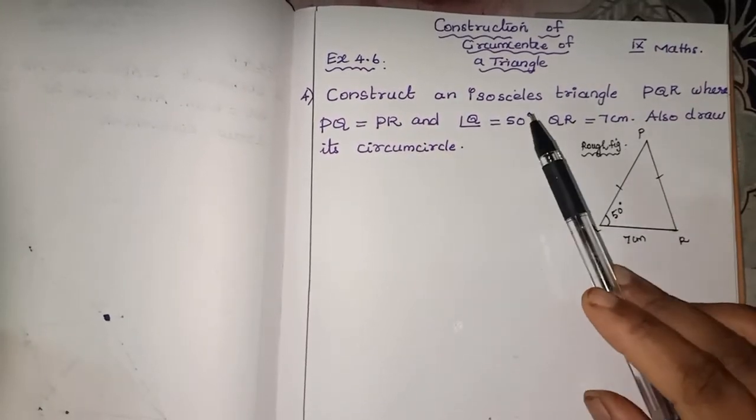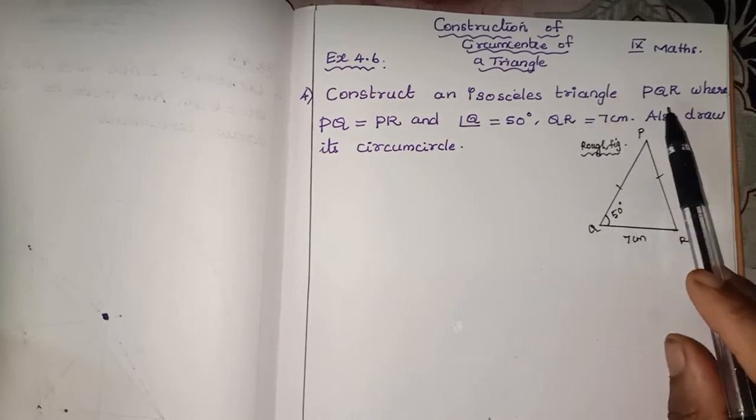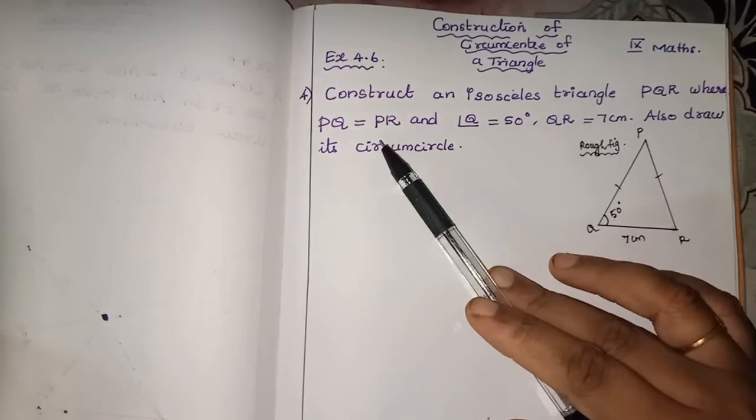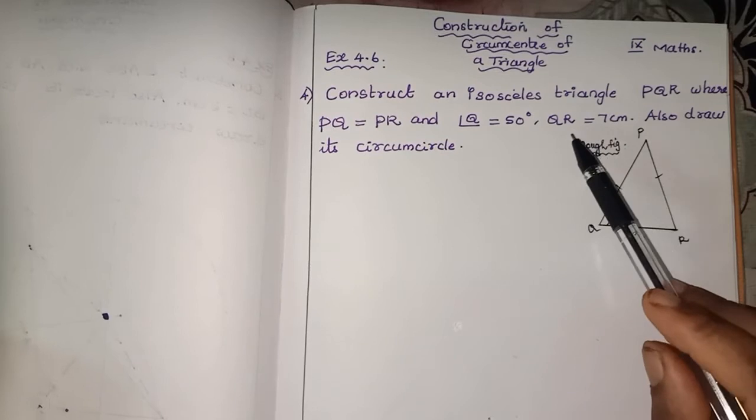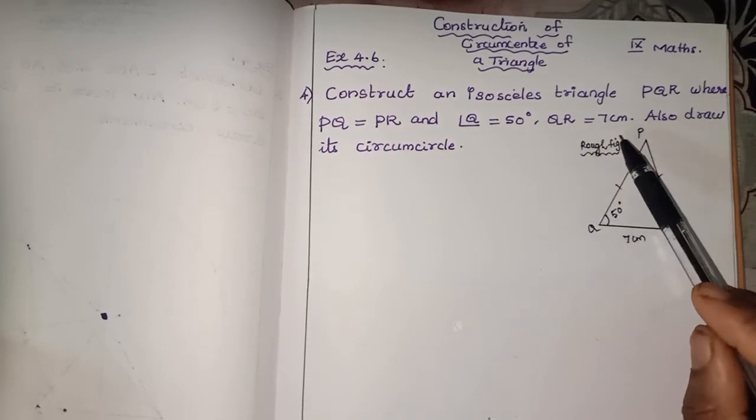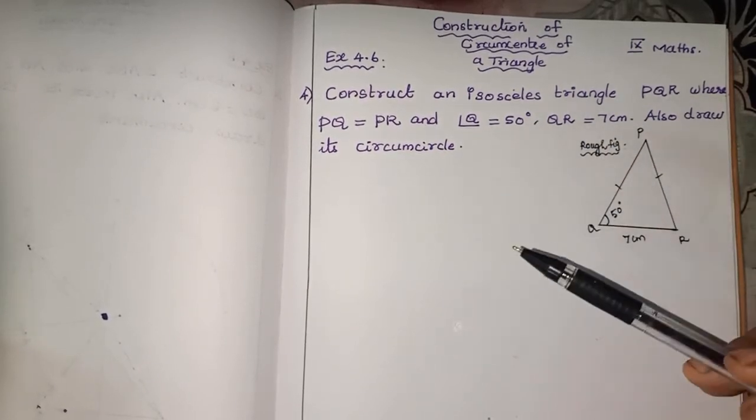It says 4.6. Construct an isosceles triangle PQR where PQ is equal to PR and angle Q is equal to 50 degree. QR is equal to 7 cm. Also draw its circumcircle.